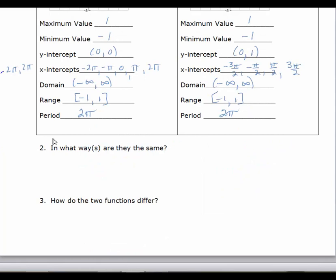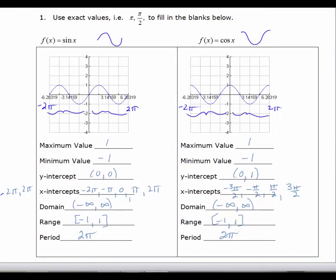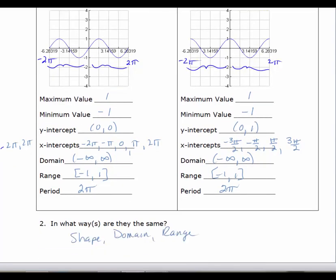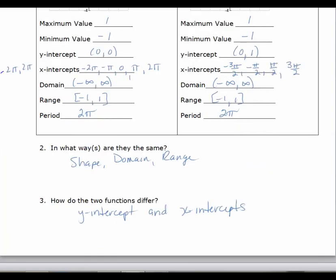When we ask questions, in what ways are the graphs the same? And we talked about the fact that the shape, the shape of the graph is the same. And the domain and ranges are the same. And in what ways are they different? Well, they have different x-intercepts. The shape is exactly the same, but their x-intercepts are different. And their y-intercepts are different also. So in the next video, I want to show you how to graph a basic sine and cosine function rather quickly. Using the information that you've got here, but in a really efficient way.